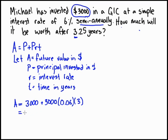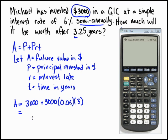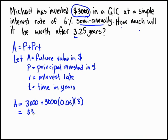Now we can solve this. I'll pull up a calculator and put this in: 3,000 plus 3,000 times 0.06 times 3. Our future value is $3,540.